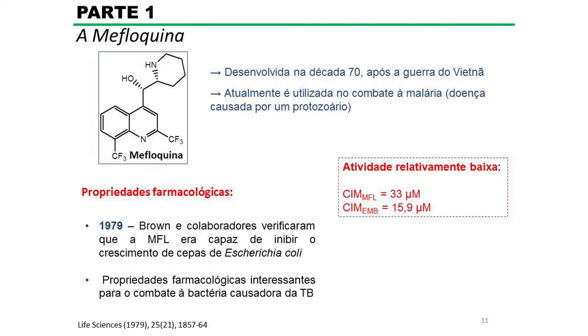No entanto, já no final da década de 70, alguns cientistas viram que a mefloquina era capaz de inibir o crescimento de determinadas bactérias também. A malária é causada por um protozoário, mas a substância tinha atividade contra bactérias também. Além disso, ela apresenta uma série de propriedades farmacológicas interessantes para o combate à bactéria da tuberculose. Só que ela tem um problema: apesar de inibir o crescimento da bactéria, ela tem uma atividade relativamente baixa. A CIM — concentração inibitória mínima — necessária é cerca de duas vezes a do etambutol, que já é utilizado no tratamento da tuberculose.